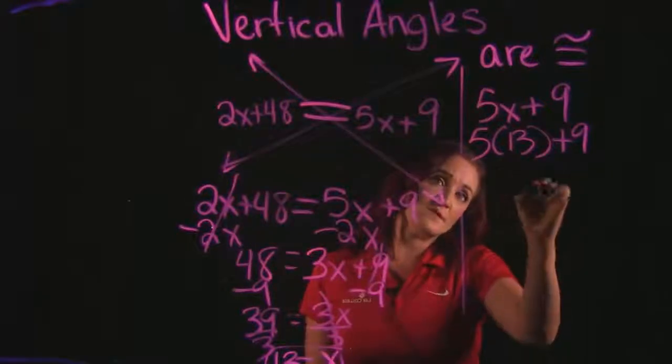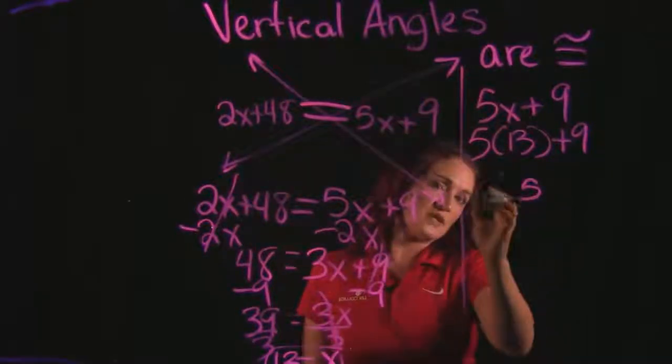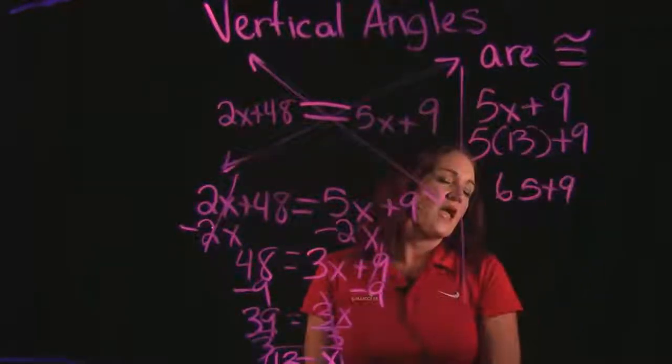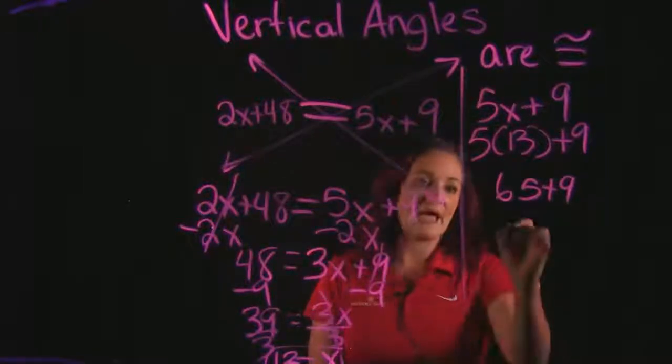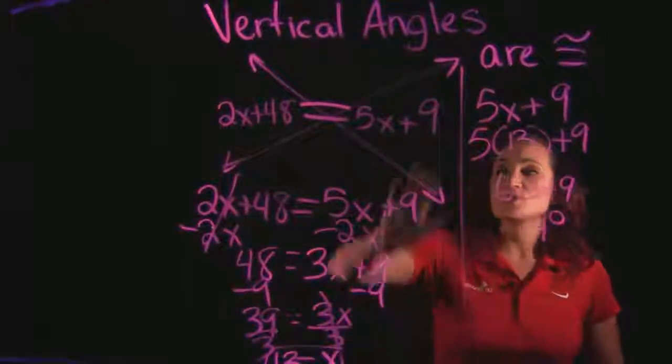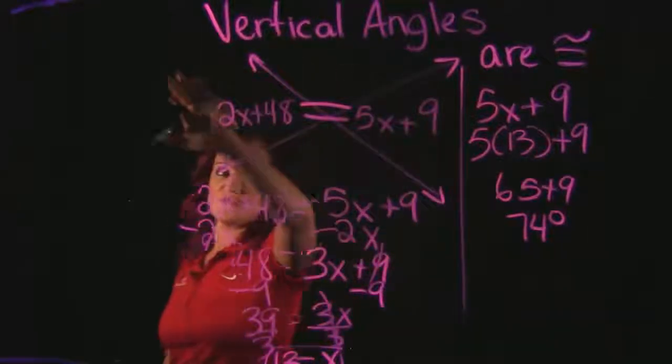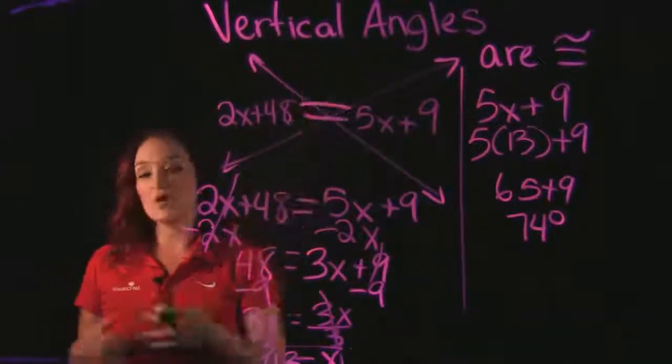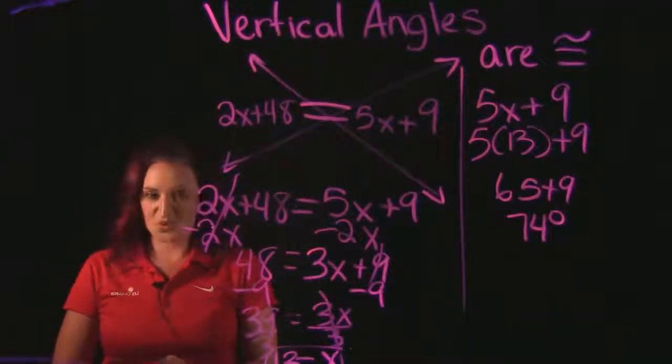So if I do 5 times 13, that is going to give me 65 and 65 plus 9 is 74 degrees. So that means that both of these angles here equal 74 degrees.